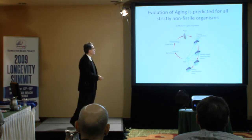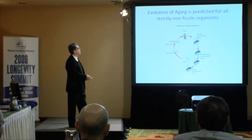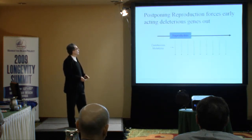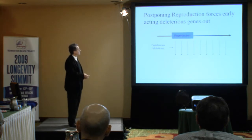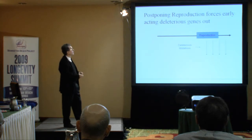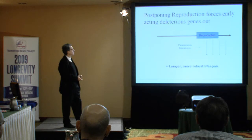Multiple episodes of reproduction, distinctive juvenile phase, obvious transition to adulthood — all of which makes our experimentation easier. And in 1977, I realized that if I shift the age of the period of reproduction, I'd be cleaning out alleles with deleterious early effects and produce the evolution of longer, more robust lifespan.